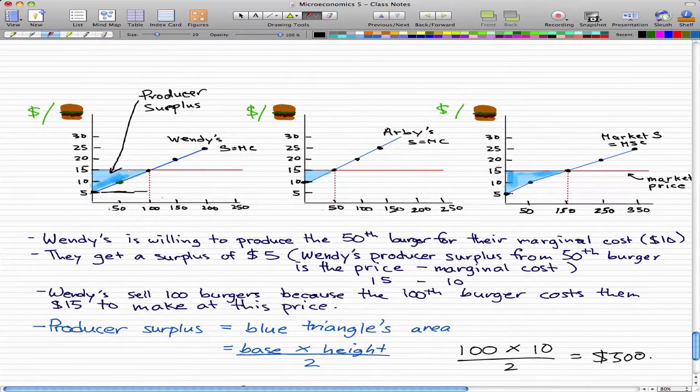So then the base is actually on the x-axis. So we go 100 across, that's our base. And the height is just from 5 to 15, which gives a difference of 10. We take 100 times 10, that gives us 1,000. But 1,000 is the area of the whole square. But we just want half of that square. So we divide that by 2 to get $500 for the producer surplus.